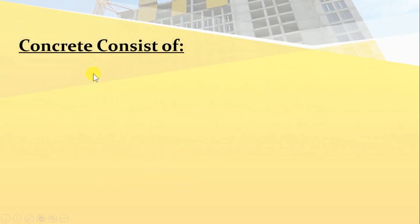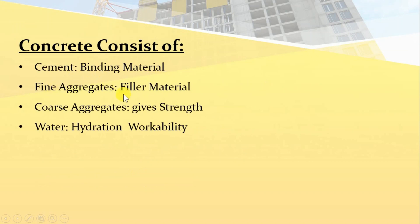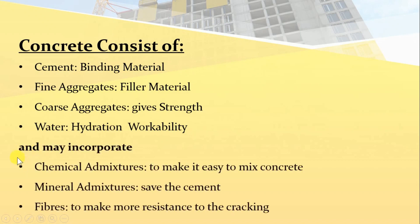Concrete consists of cement, which works as a binding material. Aggregates are of two types: fine aggregates are the filler material, and coarse aggregates give concrete most of its strength. Water plays an important role in the process of hydration when it comes in contact with cement. Sometimes concrete may incorporate chemical admixtures, mineral admixtures, or fibres. Chemical admixtures are used to improve the plasticity and workability of fresh concrete for a given water-cement ratio. Mineral admixtures supplement the function of cement, helping to save cement in some cases. Fibres can also be added to make the concrete more resistant to cracking.